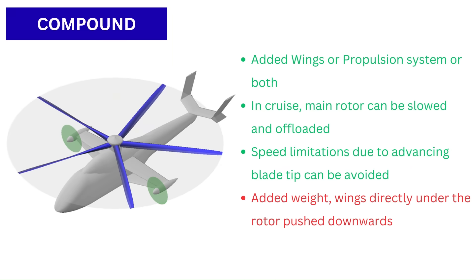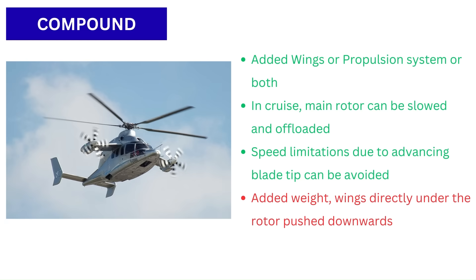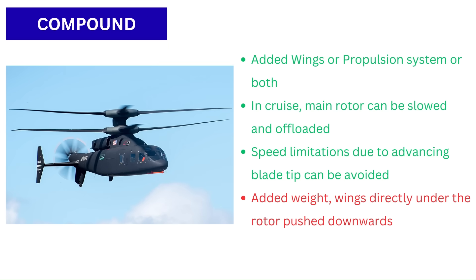A compound helicopter adds wings and separate propulsion to a conventional rotor system in order to fly faster and more efficiently than a standard helicopter while retaining vertical takeoff and landing. It can have fixed wings to carry part of the lift in forward flight, or an auxiliary propulsion system to provide thrust instead of relying solely on the rotor, or both.